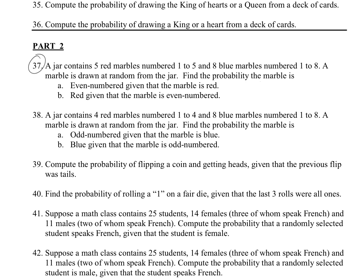So starting with 37, it says that we have a jar that contains 5 red marbles that are numbered 1 to 5 and 8 blue marbles that are numbered 1 to 8. And so, really quick, we're drawing 1, 2, 3, 4, 5. So those ones are all the red ones.